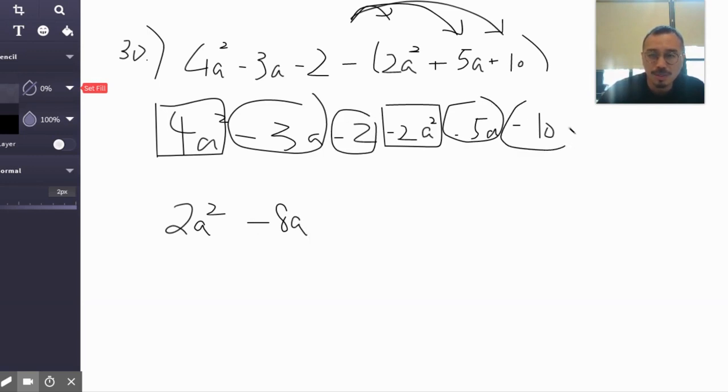Negative 2 minus 10, that's negative 12, and that's it. That's how you do it. So tomorrow, problems 32 and 33 are the same thing. That's why I wanted to make a video just to point this out to you. Alright, thanks for watching and have a good one.